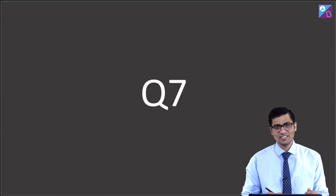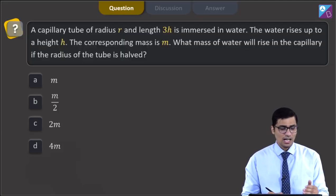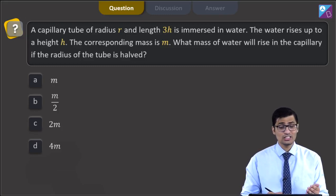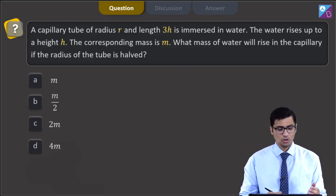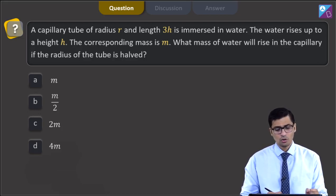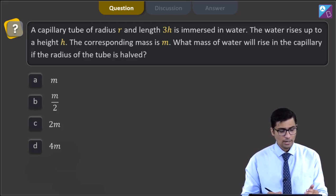This is question 7. The question says a capillary tube of radius r and length 3h is immersed in water. The water rises up to a height h and the corresponding mass is m. What mass of water will rise in the capillary if the radius of the tube is halved? The four options are m, m by 2, 2m, and 4m.